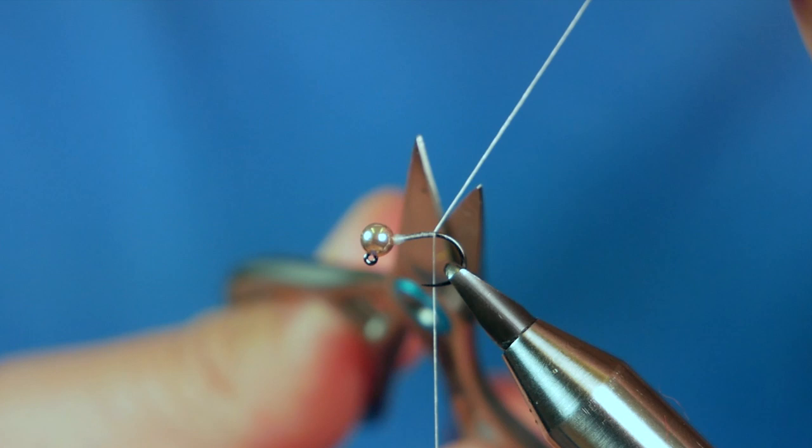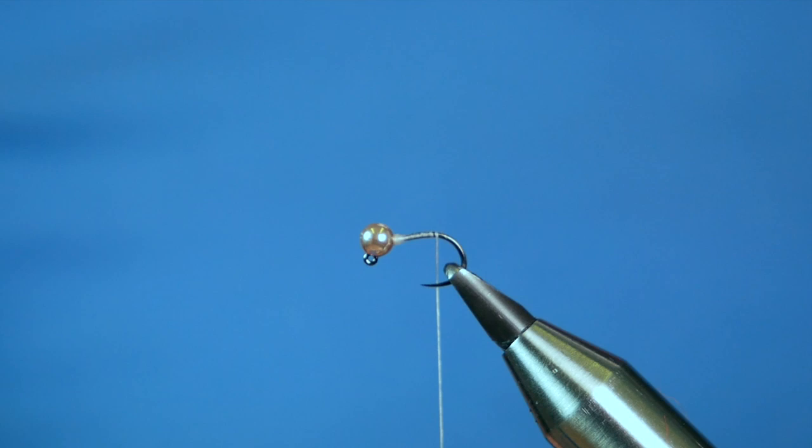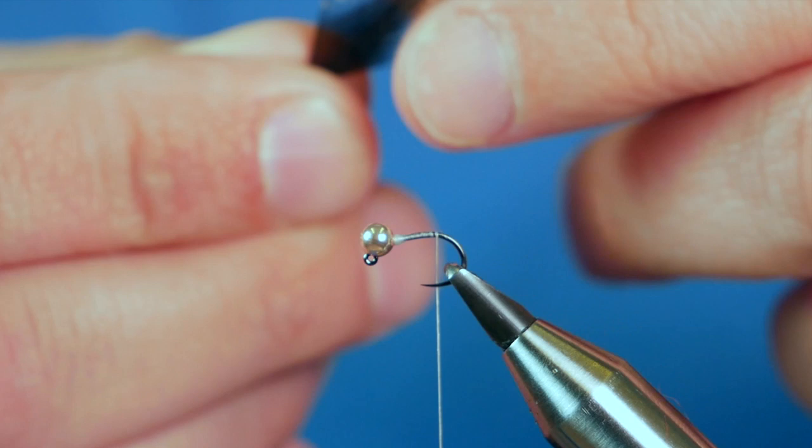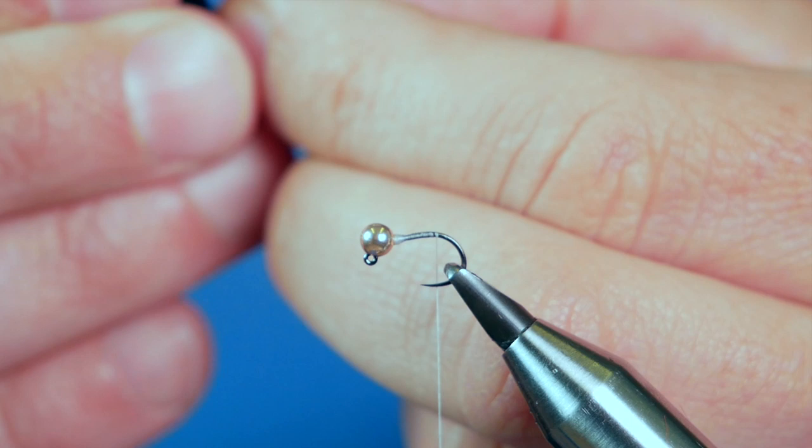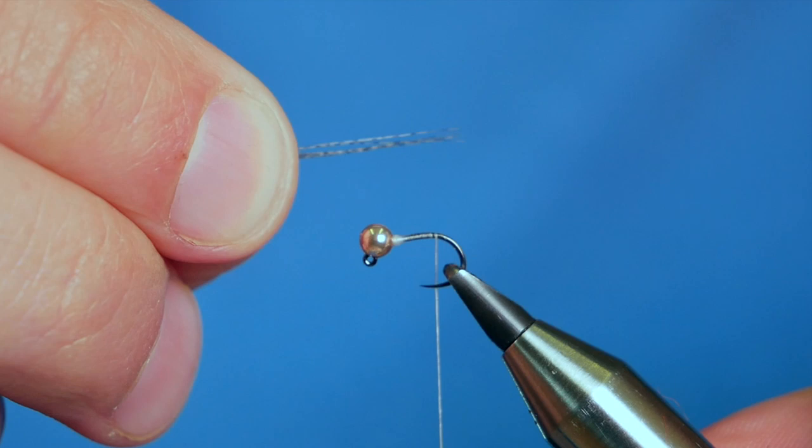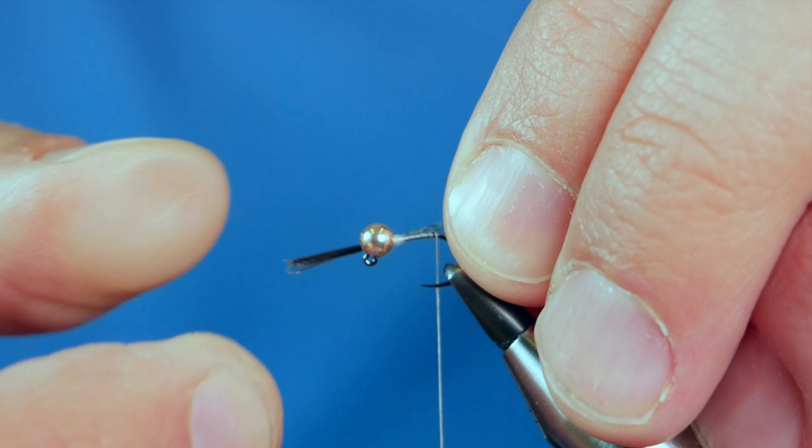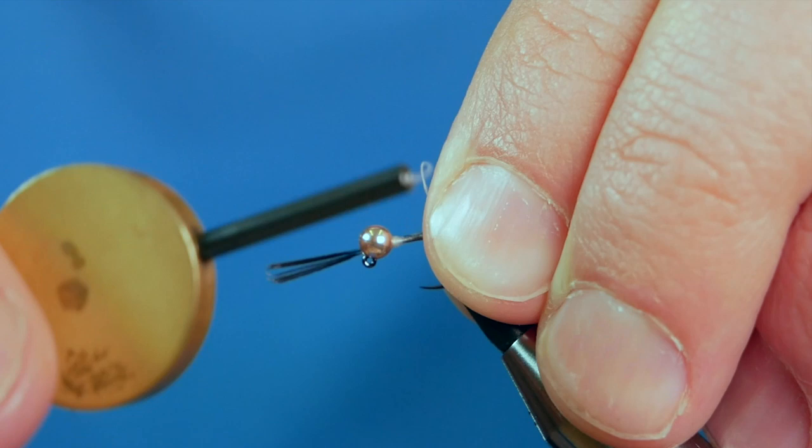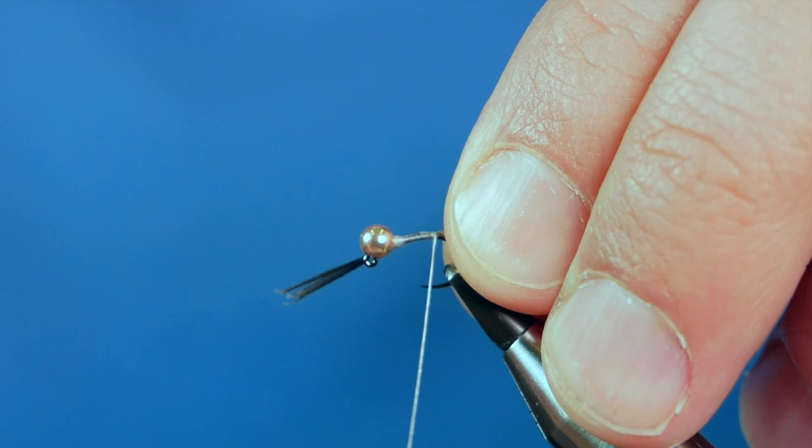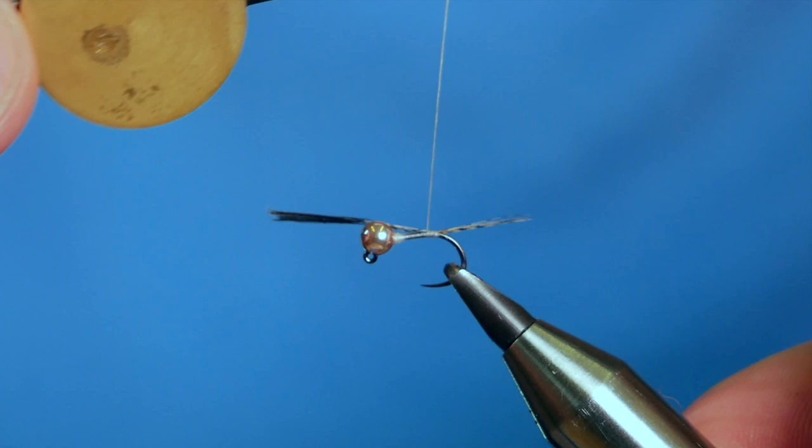Now for the tail of this little bug, I'm going to be using some Cock de Leon feathers. I want to take approximately half a dozen. I'm not going to count them out, the fish don't care. So I've got them lined up and I want about two eighths of an inch protruding. It's much more difficult doing a video with the smaller hook, but I've managed to get the tail where I want it and at the length I want it. So I'll take that as a win. You can then remove your waste.